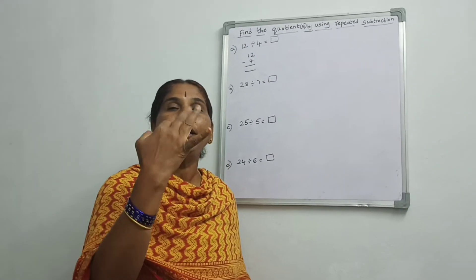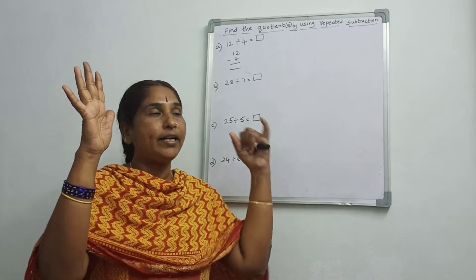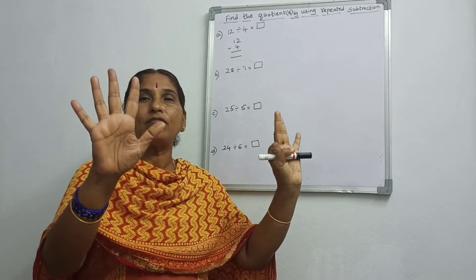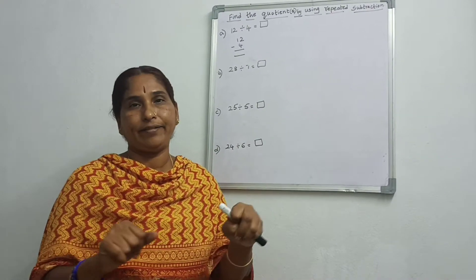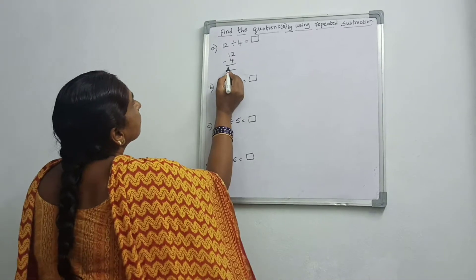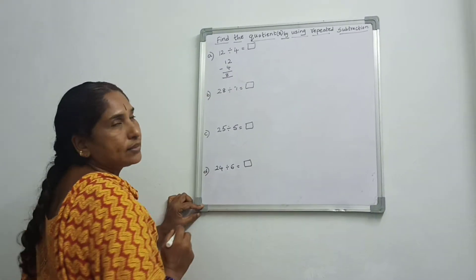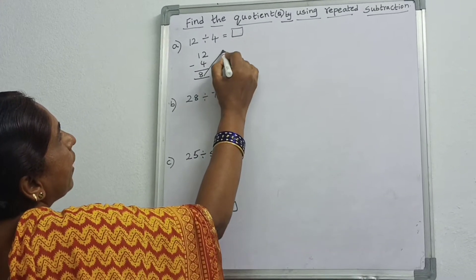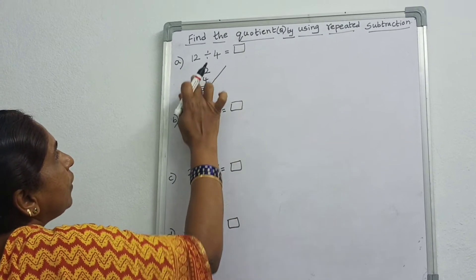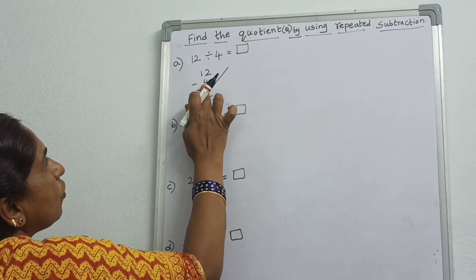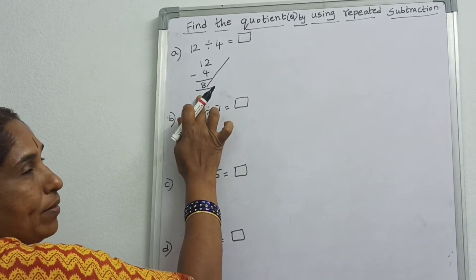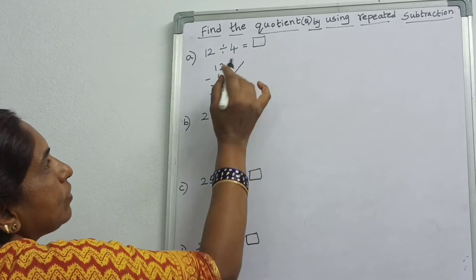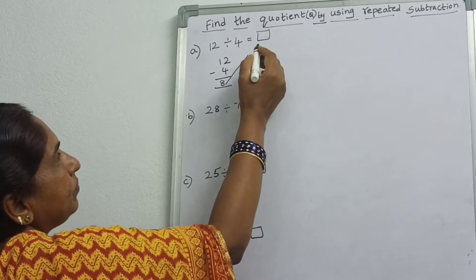Count from 4 upward: 5, 6, 7, 8, 9, 10, 11, 12. How many steps? That gives us 8. Again you have to take this 8 and subtract.